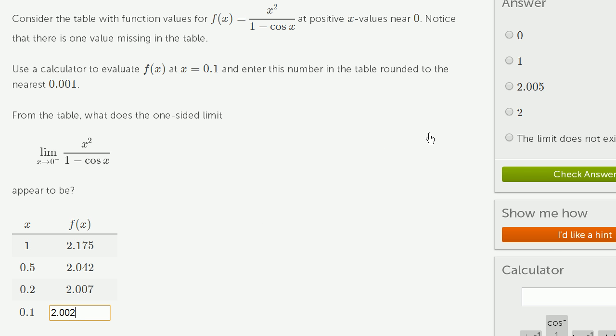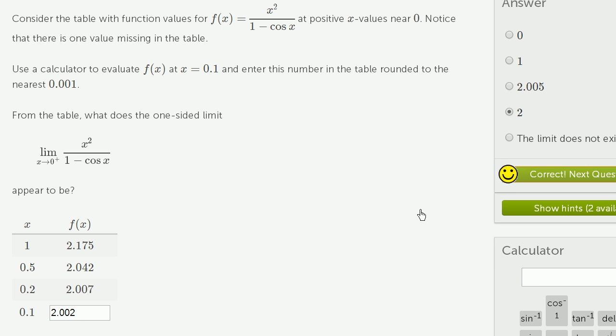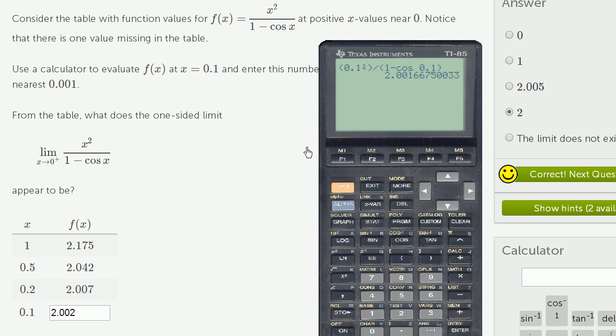And so it looks like the limit is approaching 2. It's not approaching 2.005. We just crossed from 2.007 to 2.002. So let's check our answer, and we got it right.